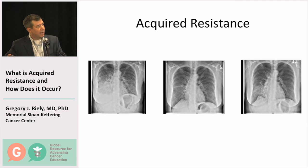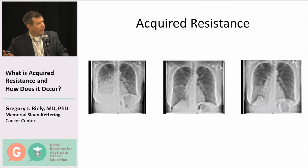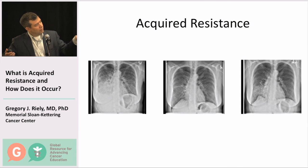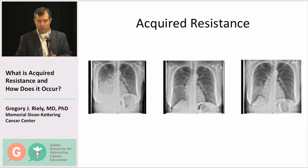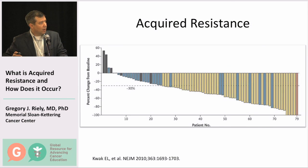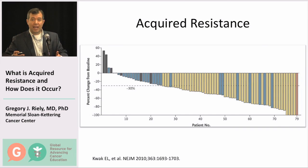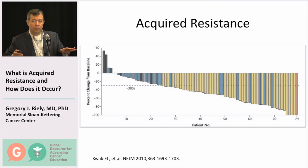Acquired resistance is best exemplified by a patient like this. In the first picture — a chest X-ray where the black area is lungs — you can see in the bottom of the right lung some evidence of cancer. In the middle chest X-ray, you see clearing of that cancer from the bottom part of the lung. And then on the far right, the last X-ray, it starts to come back. That's really the problem of acquired resistance: an initial response to treatment, and then growth of the cancer. In the waterfall plot context, these are the patients who had a great response on the right side but then had evidence of cancer growth.